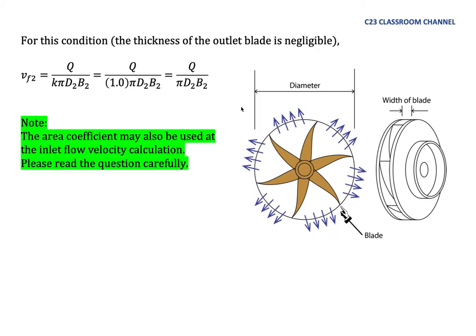If we go to a situation where the thickness of blade at the outlet is very thin, we could use the same equation vf equals Q over πD2B2, and here k equals 1.0 or 100%, because the area here is 100% covered by water flow. Sometimes we will use the area coefficient at the inlet, so please be careful with the question whether they give you the value of k for inlet and outlet, or just for the outlet only.